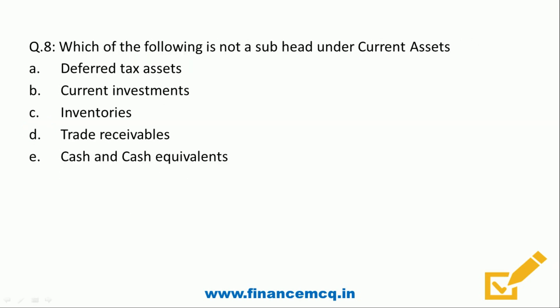Question eight: which of the following is not a sub-head under current assets? Option A: deferred tax assets, option B: current investments, option C: inventories, option D: trade payables, option E: cash and cash equivalents. The correct answer is option A — deferred tax assets come under non-current assets, while current investments, inventories, trade receivables, and cash and cash equivalents are all part of current assets.